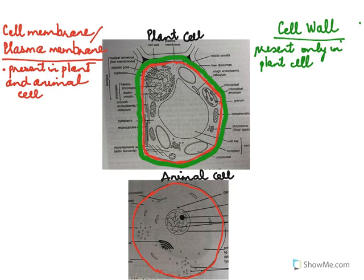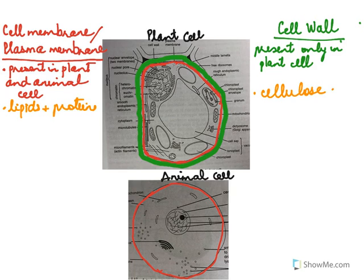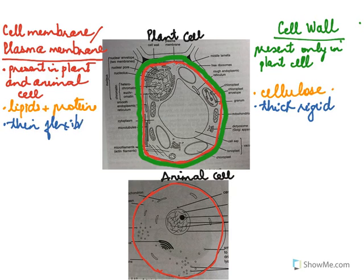The plasma membrane is made up of lipids and proteins, whereas the cell wall is made up of cellulose. Since the cell wall is very thick, it is thick and rigid — not flexible. However, the cell membrane is thin and flexible. That's why we saw earlier how the amoeba can engulf its food through endocytosis — endocytosis was possible because the cell membrane is flexible.